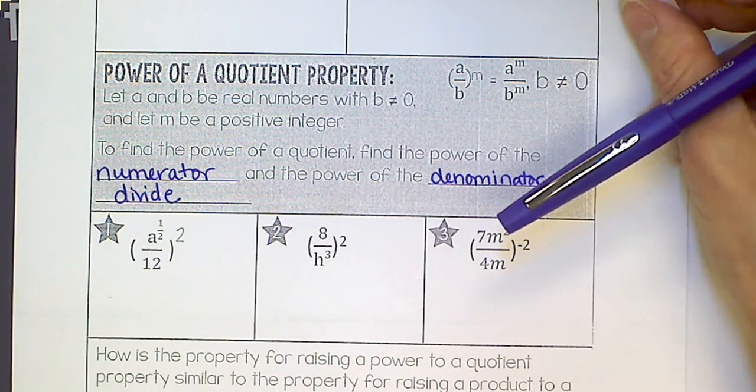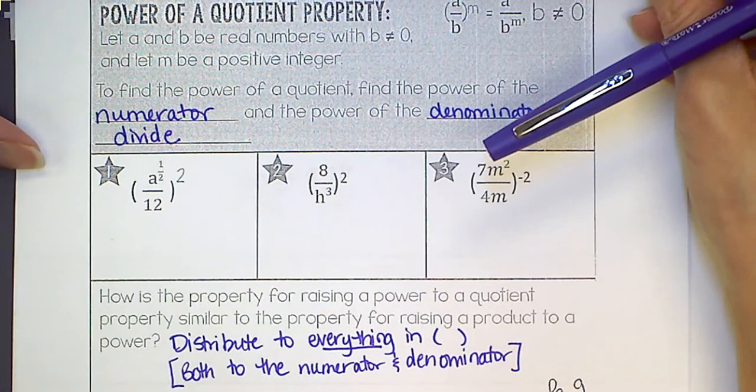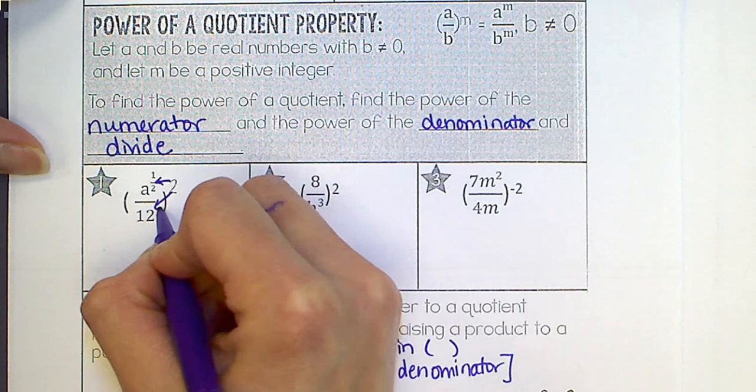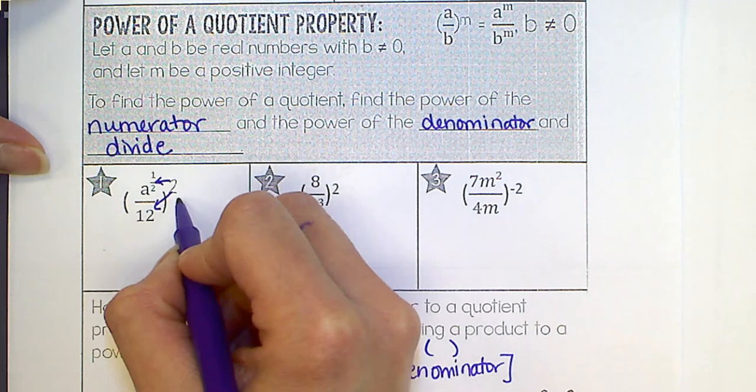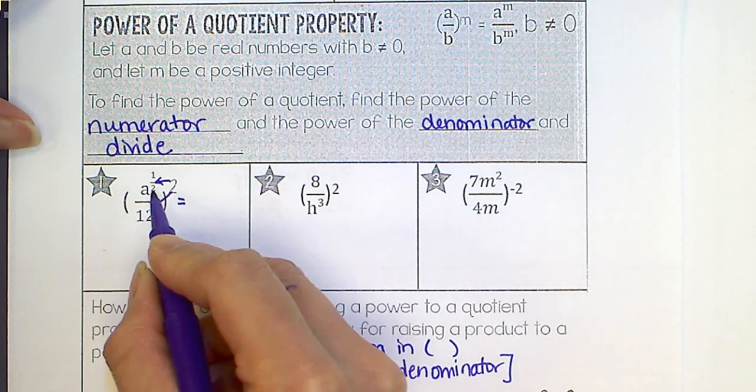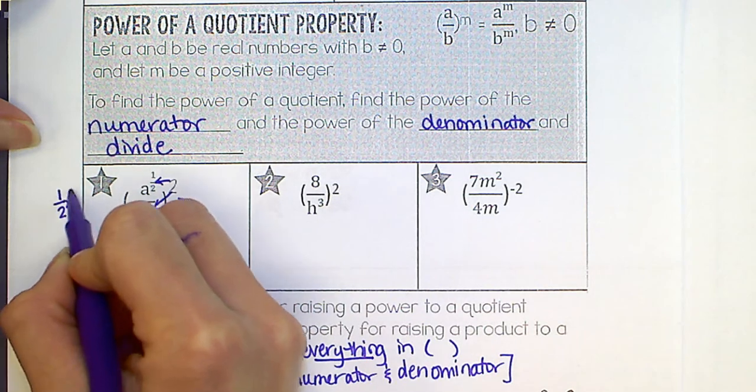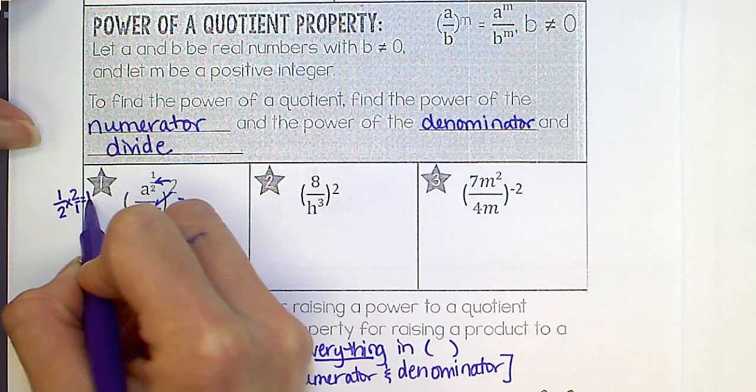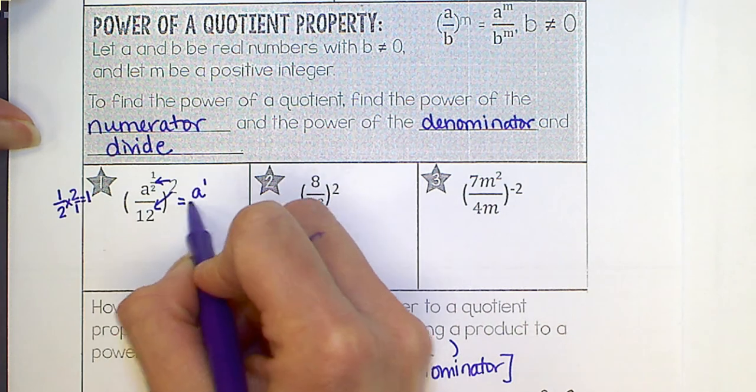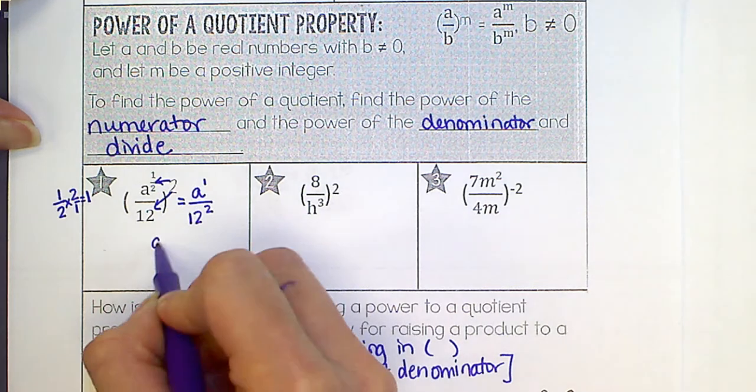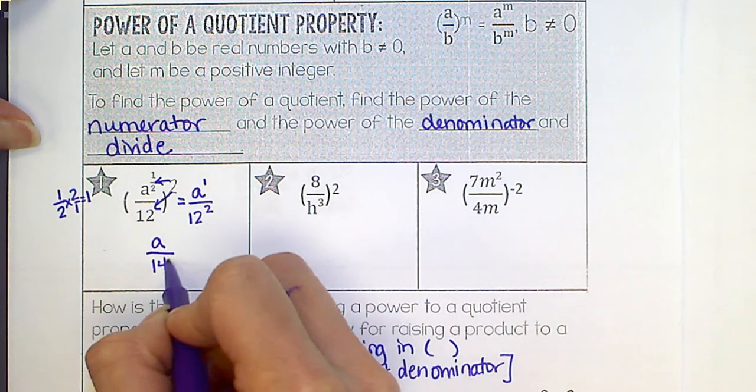So let's just try a couple down here as well. So we need to distribute these two, both items in the parentheses. Now, 1 half times 2, that's like 2 over 1 is 1. So this is really a to the 1st over 12 squared. Now simplify: a to the 1st is just a, 12 squared is 144, and you are done.